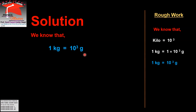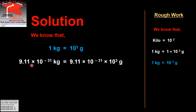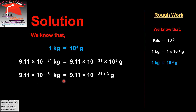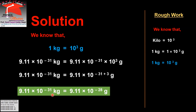Now we know that 1 kg is equal to 10 to the power 3 grams, and what we have is 9.11 into 10 to the power minus 31 kg. We multiply both sides: 9.11 into 10 to the power minus 31 kg is equal to 9.11 into 10 to the power minus 31 multiplied by 10 to the power 3 grams. Since the base 10 is common, powers add up: minus 31 plus 3 equals minus 28. So the answer is 9.11 into 10 to the power minus 28 grams.